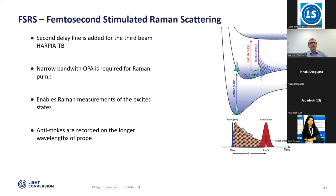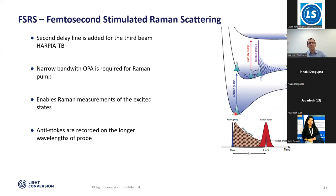Another way of doing three beams is to have the third beam not femtosecond but picosecond, because a picosecond beam has narrow bandwidth. So you can have stimulated Raman scattering. The method is called femtosecond stimulated Raman scattering, or FSRS. You excite the sample with a femtosecond beam and then measure the Raman spectrum of your sample's excited state, which is a very nice way to study rotational and vibrational dynamics.